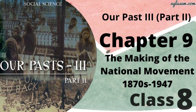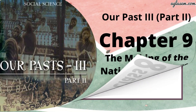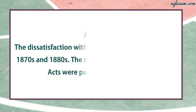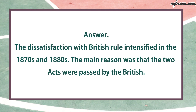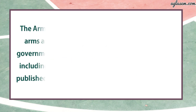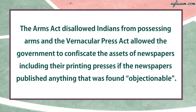Question number one: Why were people dissatisfied with British rule in the 1870s and 1880s? The dissatisfaction with British rule intensified in the 1870s and 1880s. The main reason was that two acts were passed by the British — the Arms Act in 1878 and the Vernacular Press Act in 1878. The Arms Act disallowed Indians from possessing arms, and the Vernacular Press Act allowed the government to confiscate the assets of newspapers including their printing press if they published anything found objectionable.